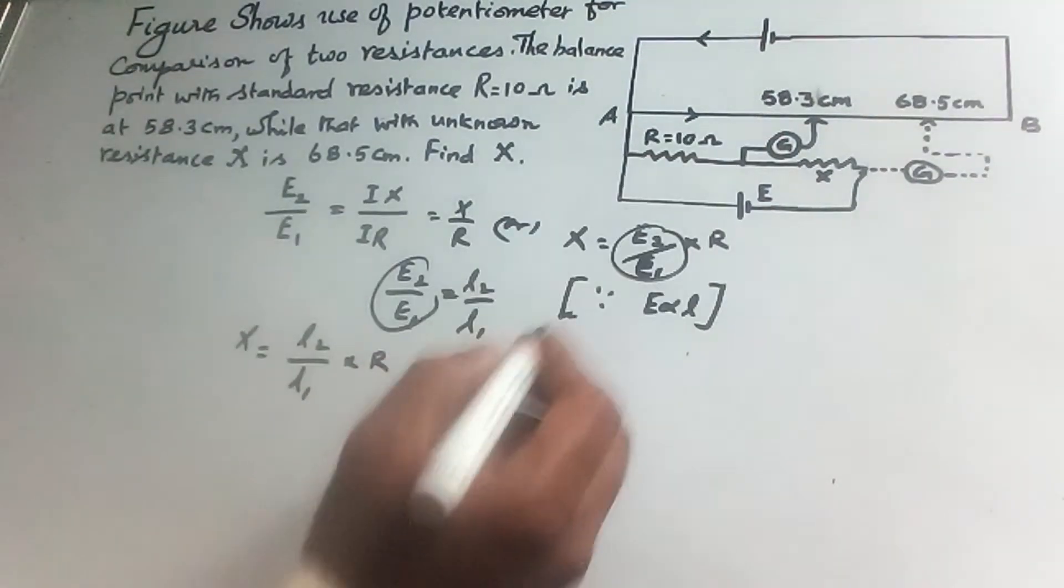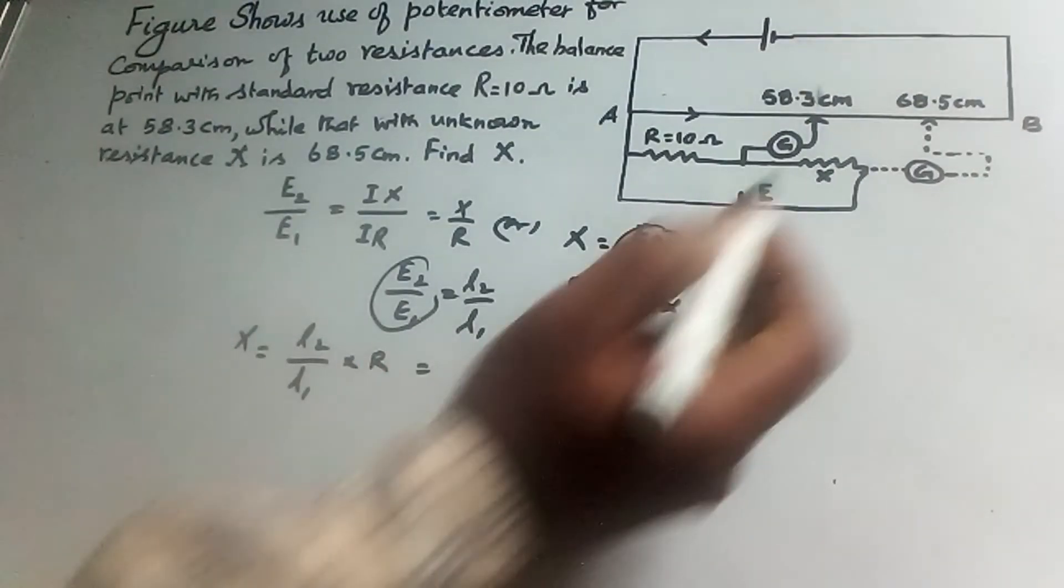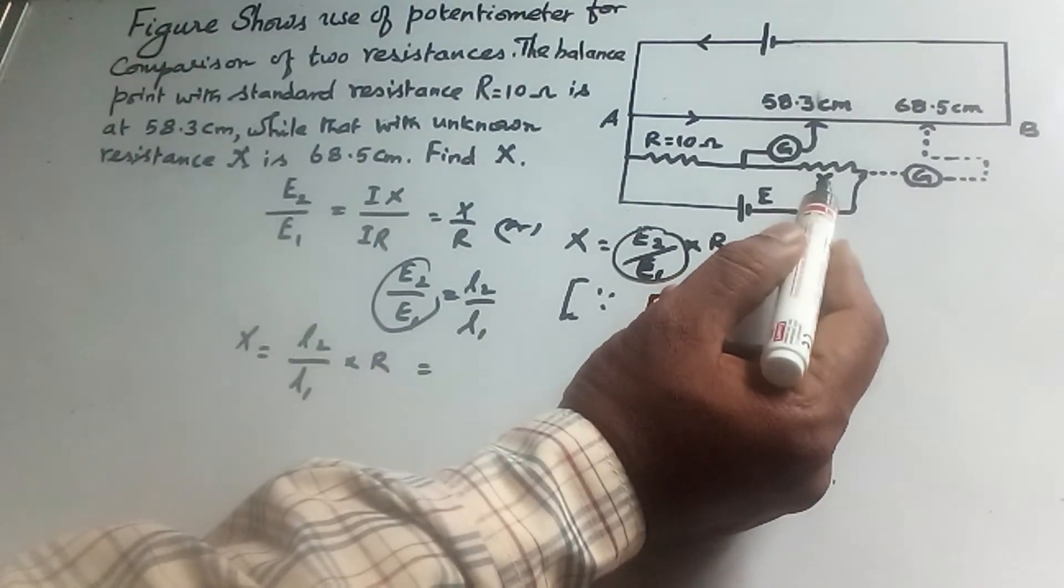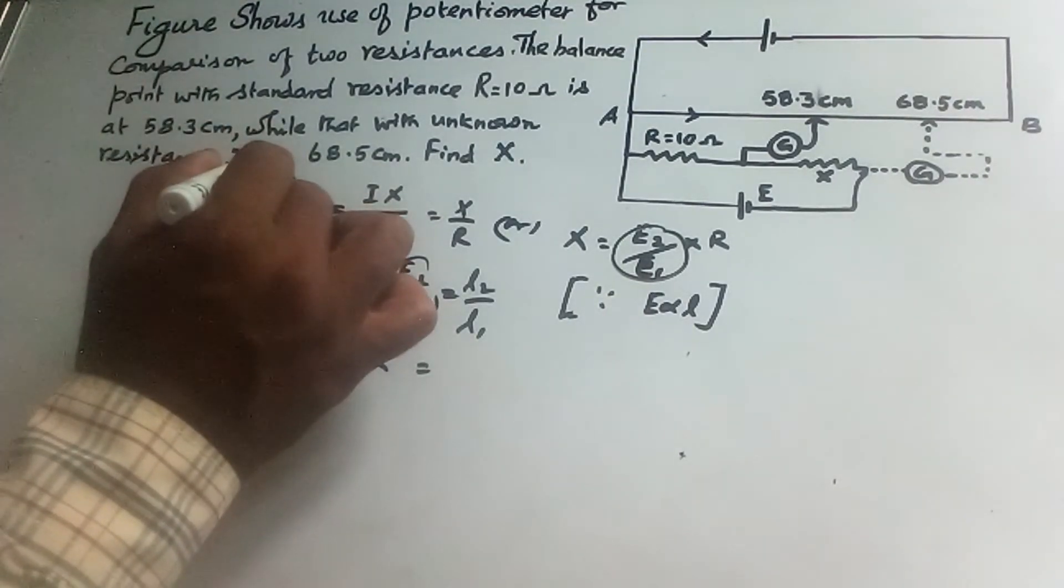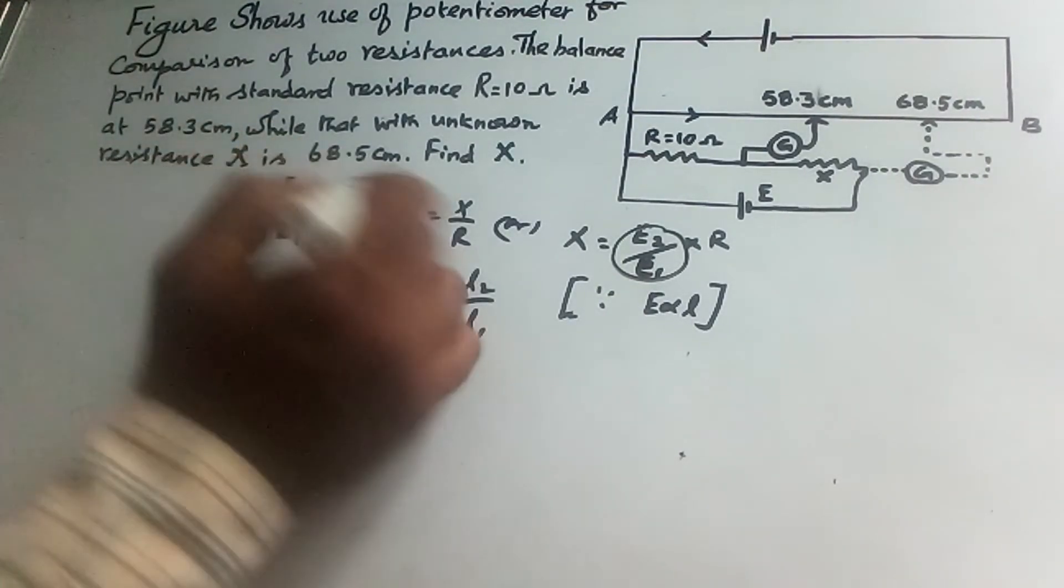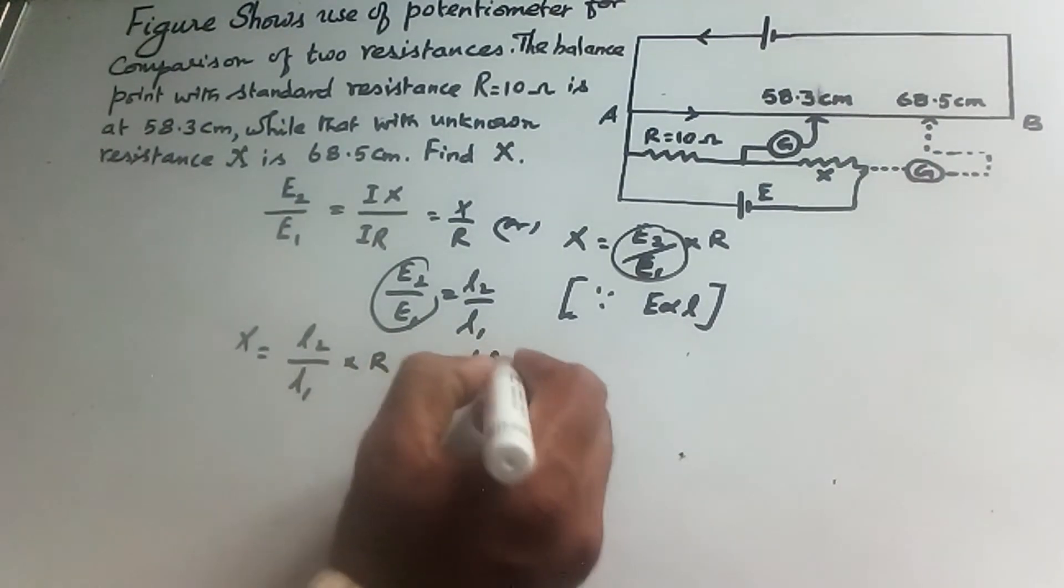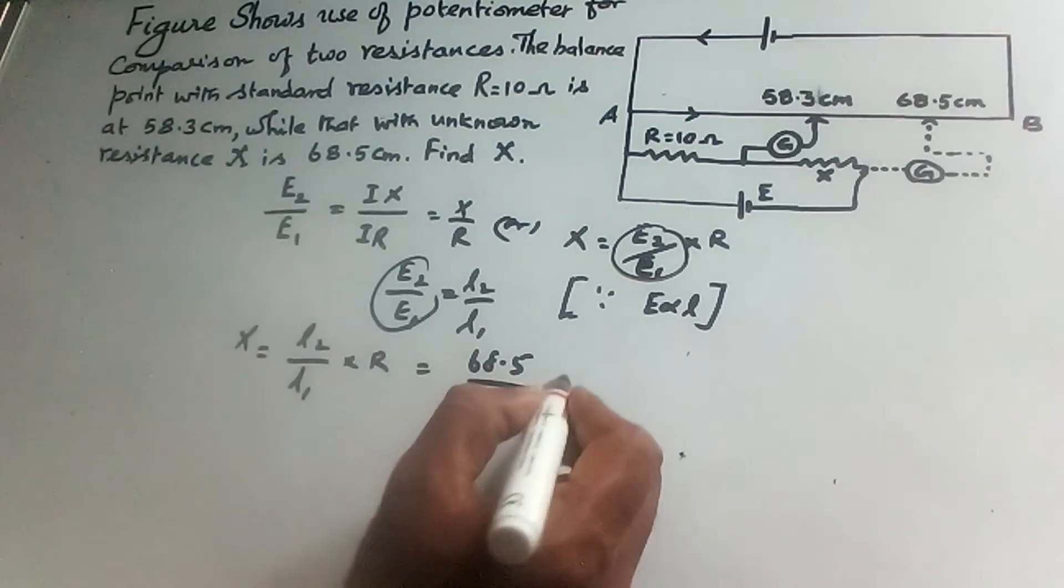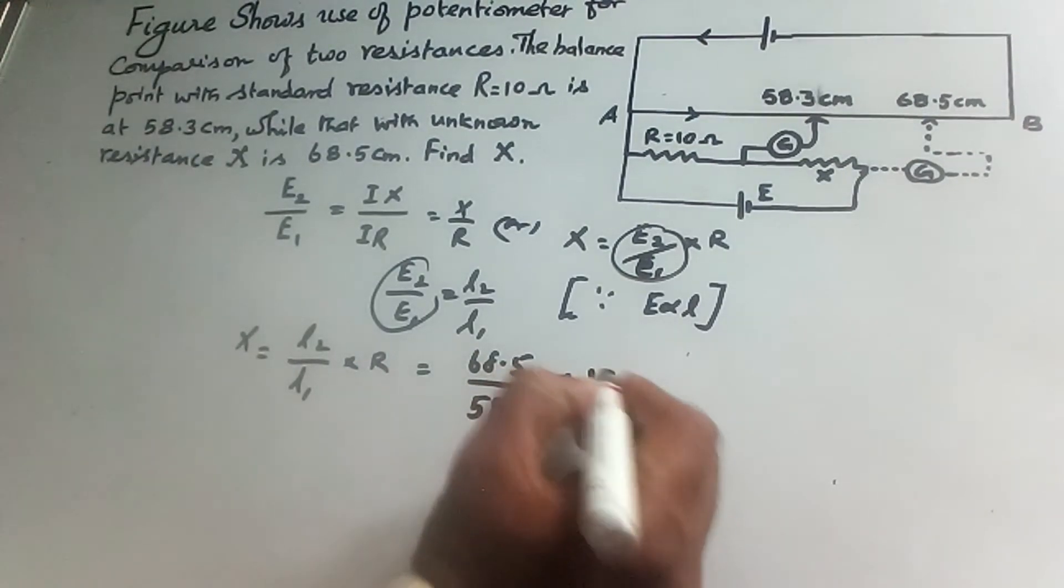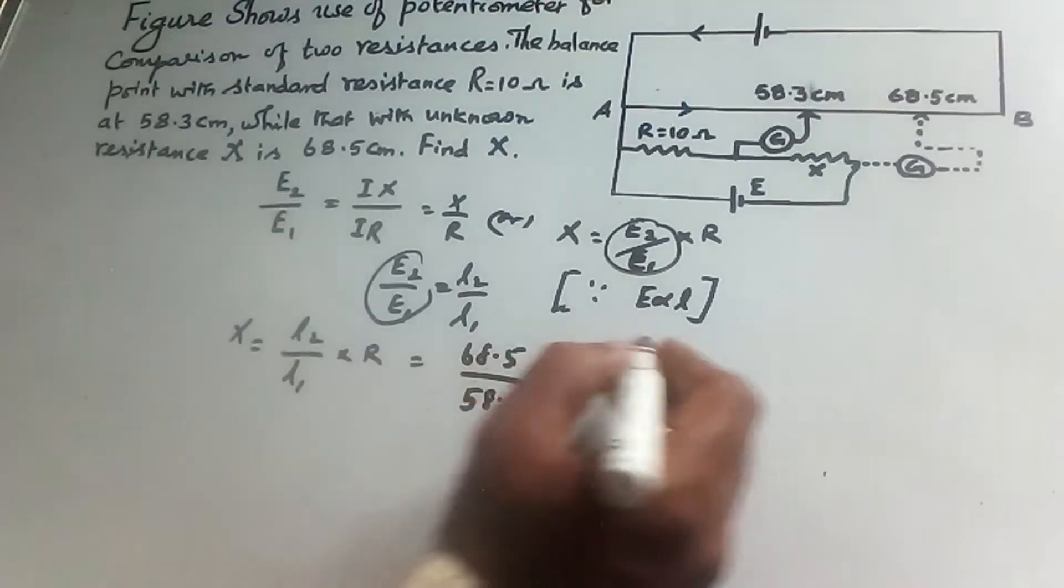The corresponding values are given. The length for x is 68.5 centimeter, so 68.5 is l2 and l1 is 58.3. The value of r is 10.